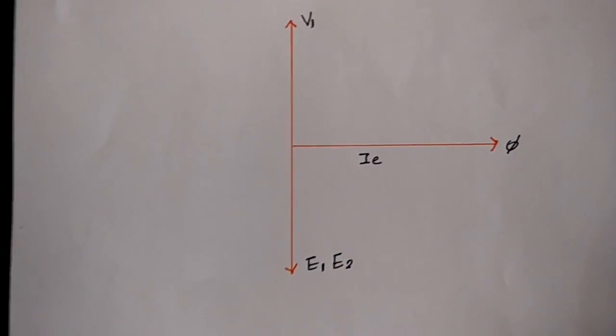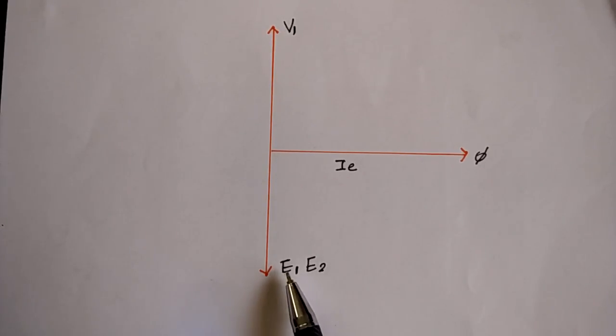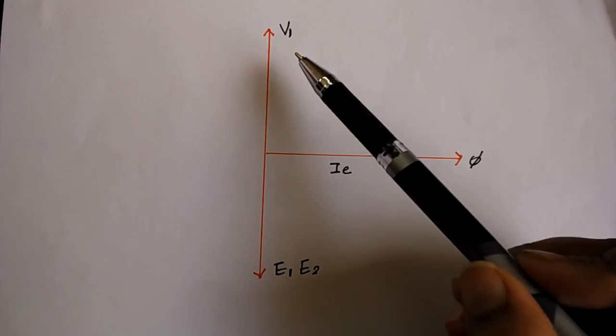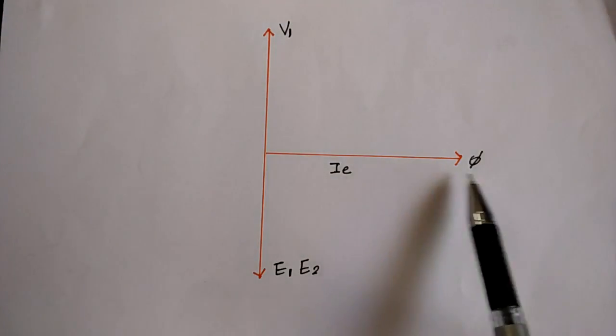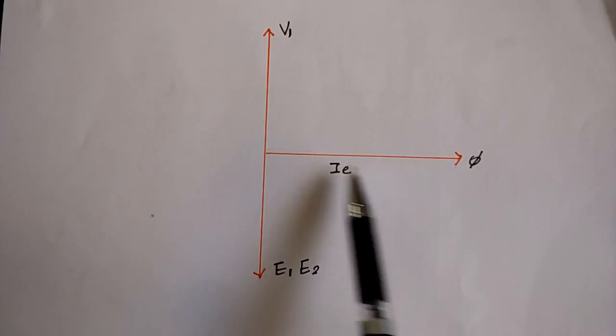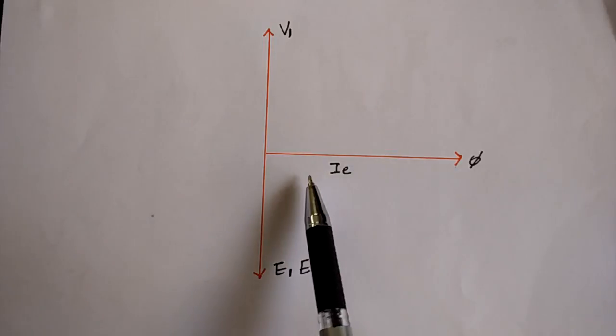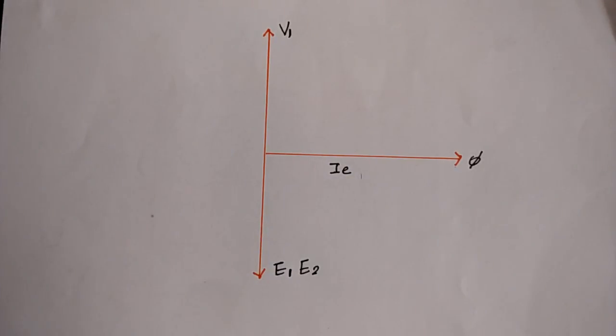Now if we talk about the phasor diagram, you can see here, since the induced EMF, the RMS value of induced EMF should be equal and opposite to the applied voltage V1. This is your flux phi. As it's an inductive load, V1 will lead the flux phi or the current with an angle of 90 degrees.